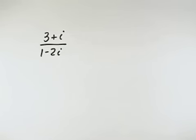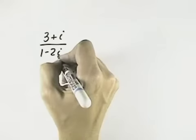Here we want to perform the indicated operation, and in order to do this division, we actually rationalize the denominator, which is the same as multiplying by the conjugate, because i is the square root of negative 1.